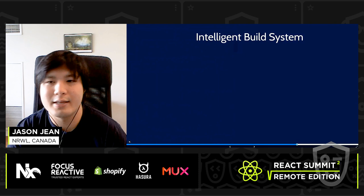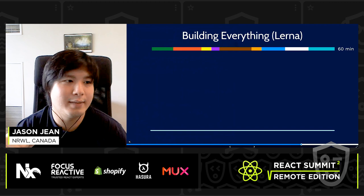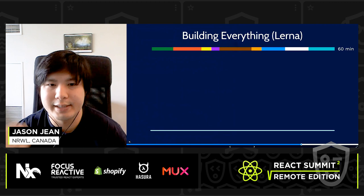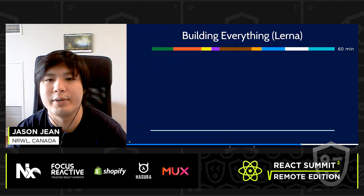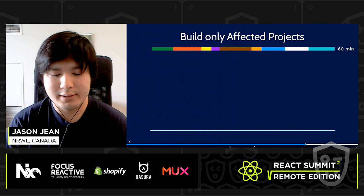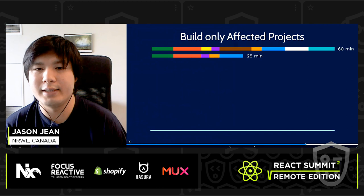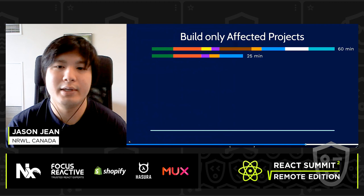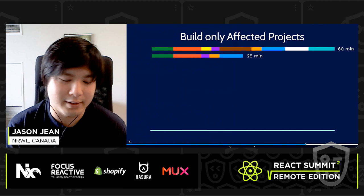These dependencies are also crucial for the intelligent build system. When people think of monorepos, they often think of running everything — like Lerna does — which can grow to 60 minutes or more. That's not scalable if you want to make a PR and verify it within five minutes. NX allows you to build only the affected projects. For a small change in a large monorepo, you don't need to test everything — you can test only the relevant parts, cutting times by more than half, to around 25 minutes in a hypothetical scenario.